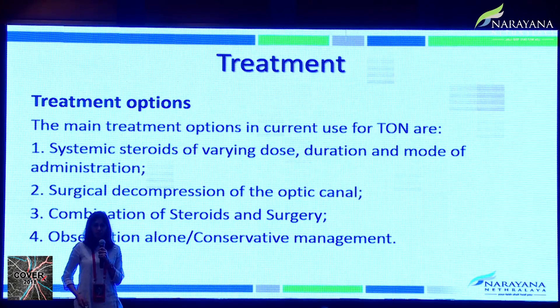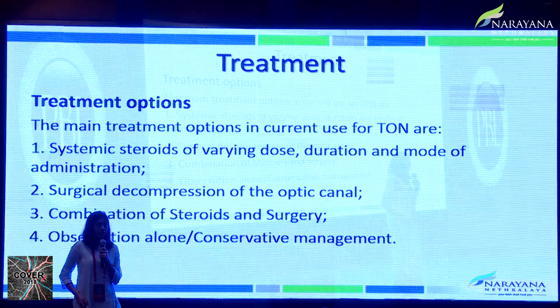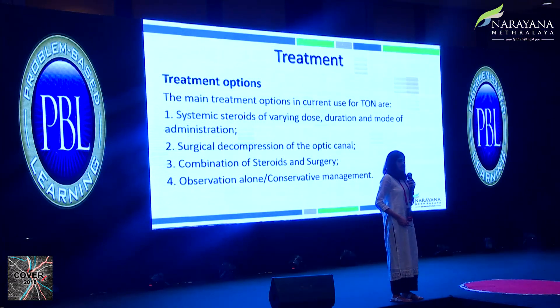The challenge in treating traumatic optic neuropathy is that, though it is an important cause of severe vision loss, clinicians remain divided over the best management strategy, since there are no evidence-based guidelines and no randomized controlled trials. Available treatment options include systemic steroids, optic nerve decompression, optic canal decompression, a combination of both, or conservative management.